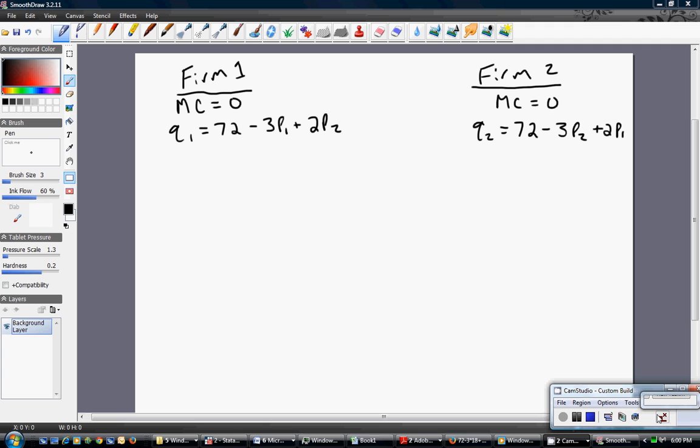In this setup, we're going to have two firms. The firms are going to set price simultaneously at the same time. Firm one has marginal cost equal to zero. Firm two has marginal cost equal to zero. This simplification keeps the math a little bit easier for us.